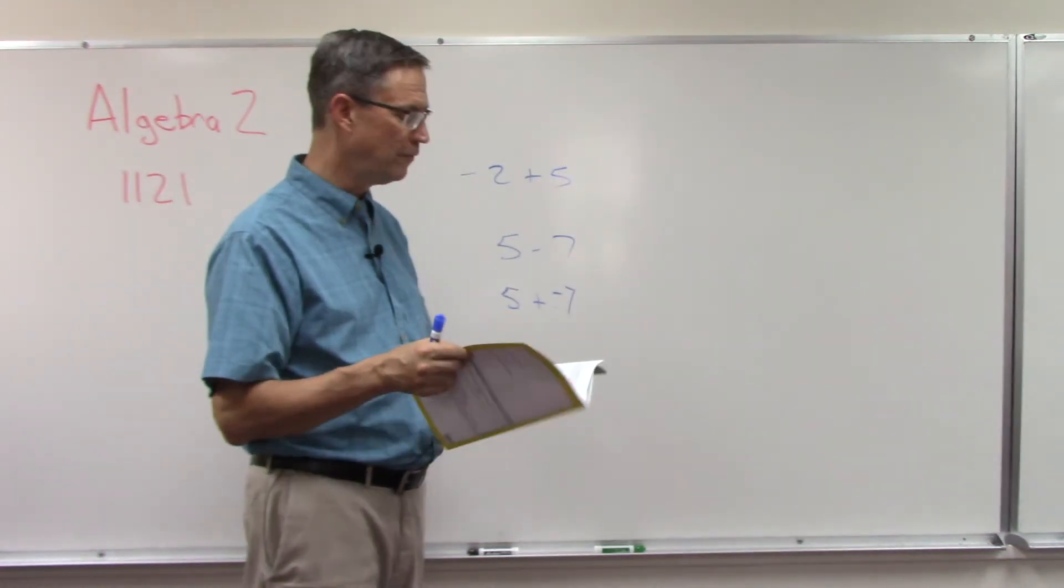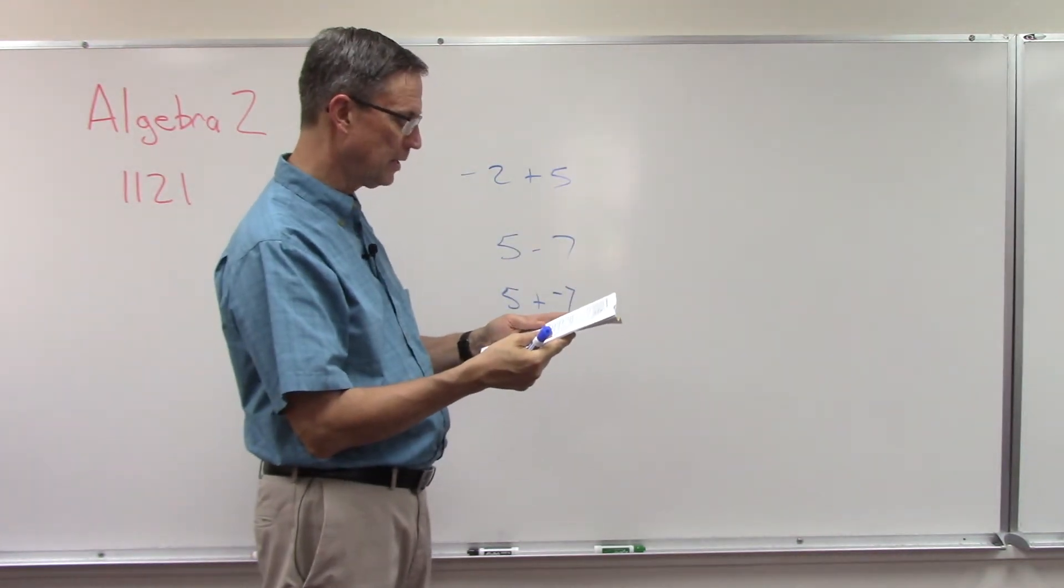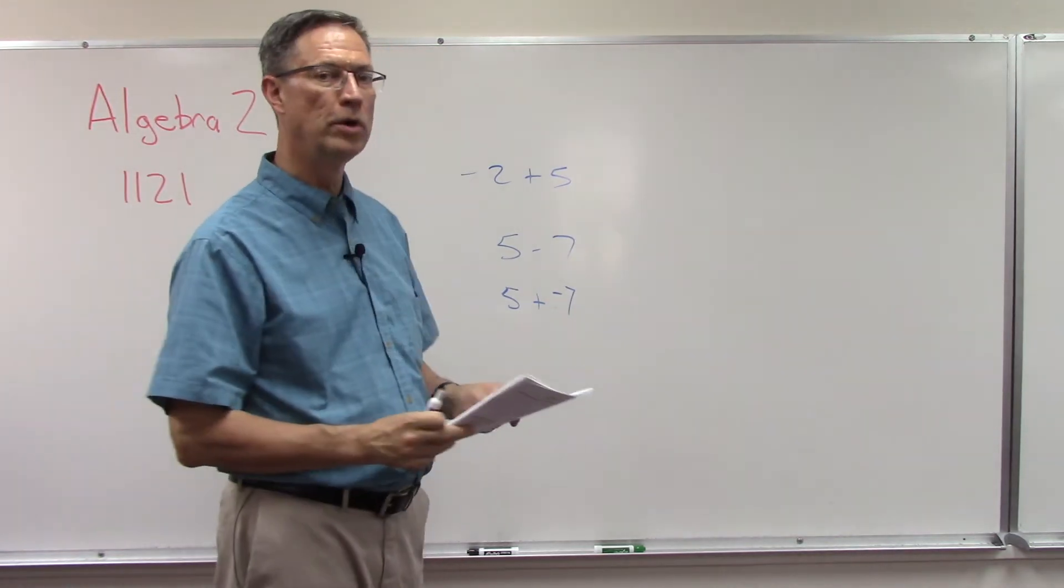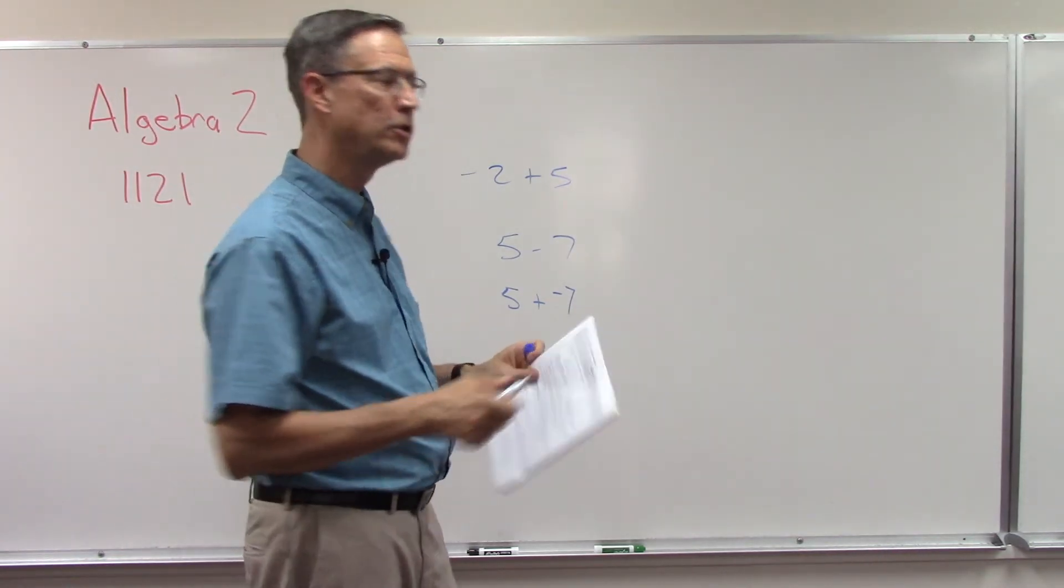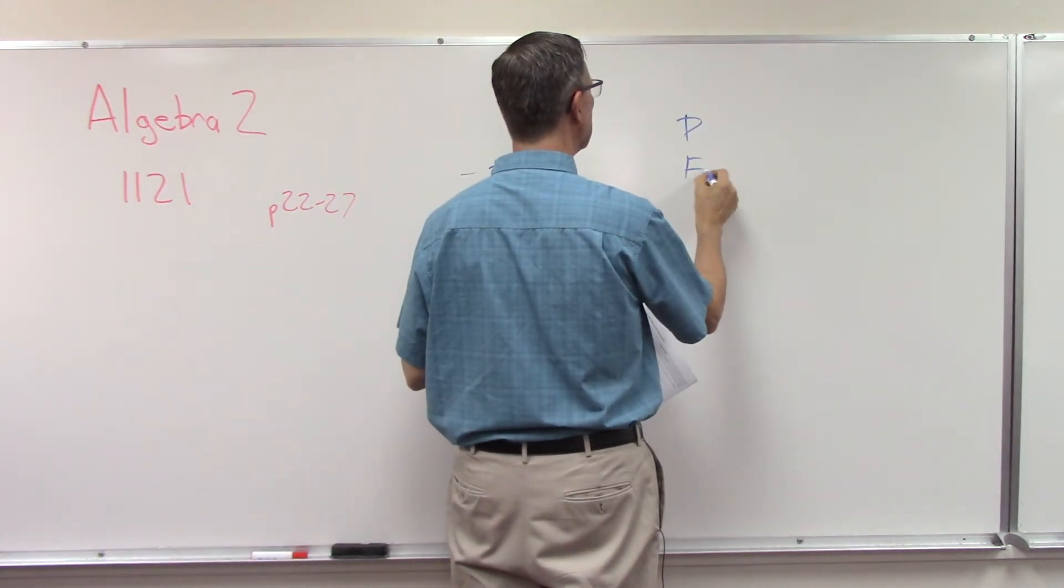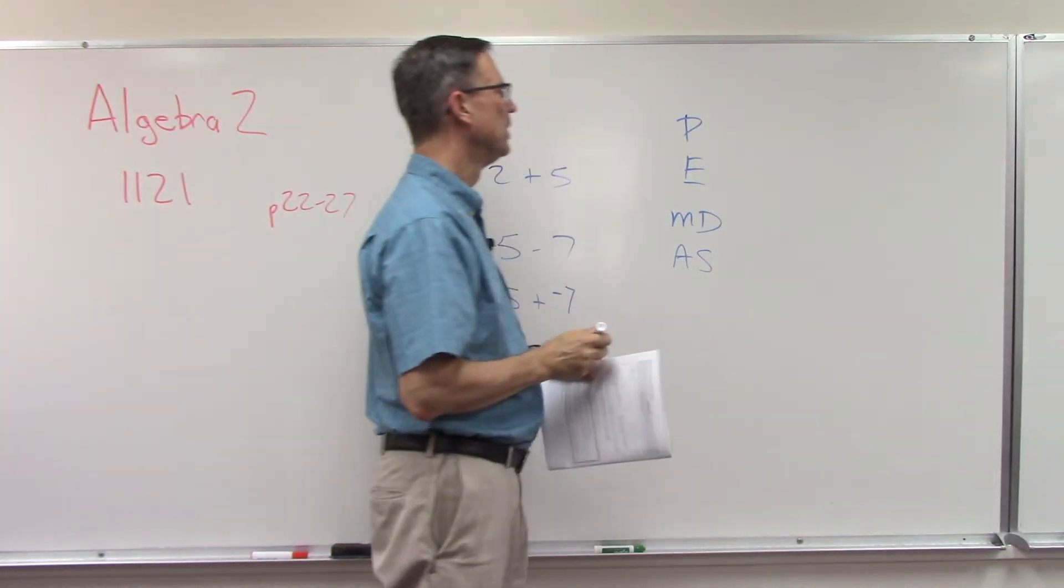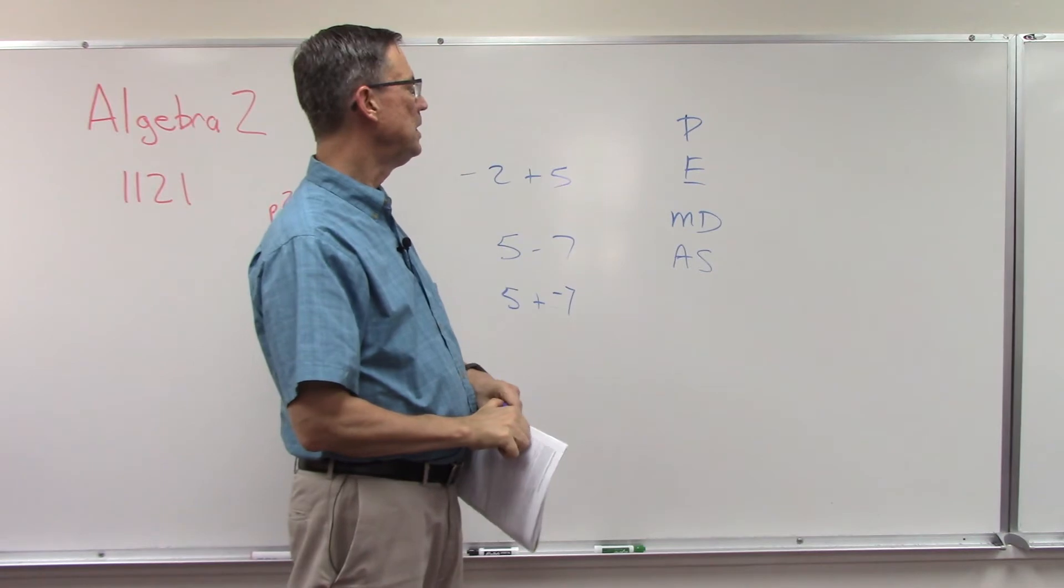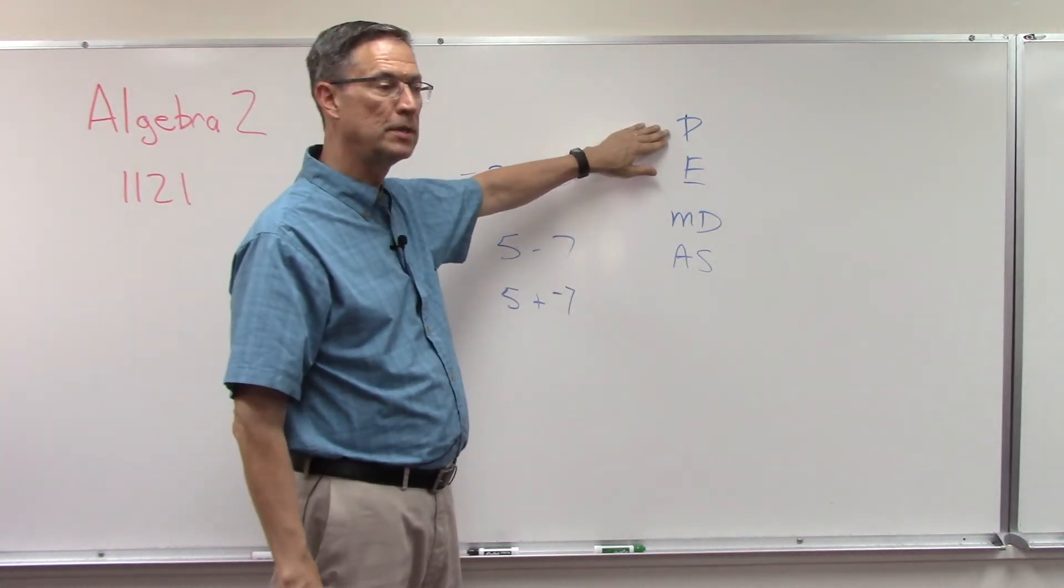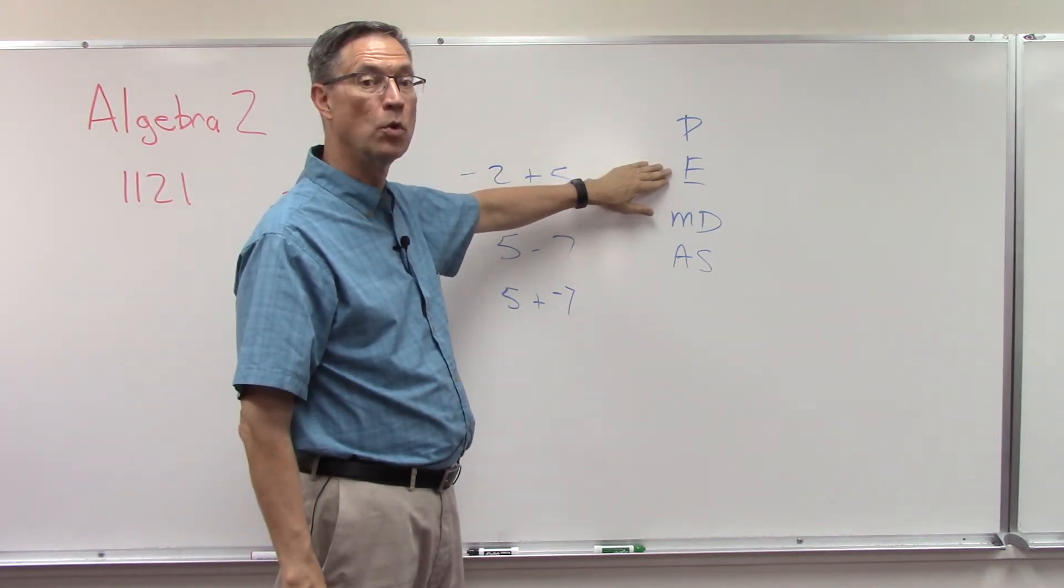Then the last thing on page 28, we sometimes call this the order of operations. Back in pre-algebra we gave you that little clue, remember please excuse my dear aunt Sally. P-E-M-D-A-S, please excuse my dear aunt Sally. So we first do anything that has parentheses, the next step is we deal with any exponents or square roots.